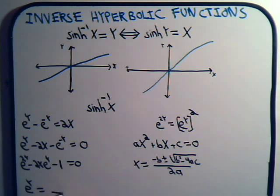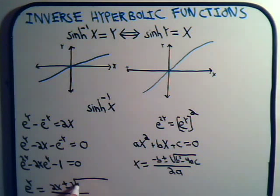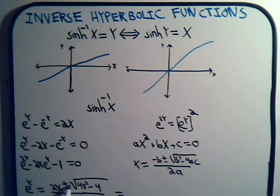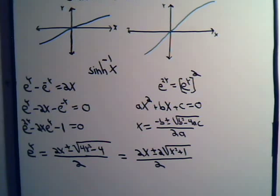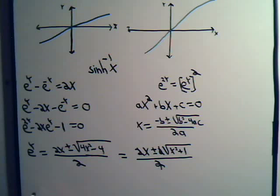Applying the quadratic formula: negative b is plus 2x, b squared is 4x squared, minus 4ac gives plus 4, all divided by 2. We can factor the 4 out of the square root, giving 2x plus or minus 2 times the square root of x squared plus 1, divided by 2. This simplifies to x plus or minus the square root of x squared plus 1.